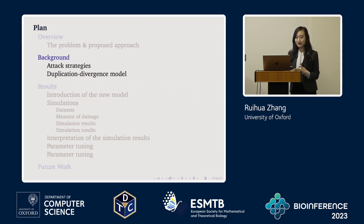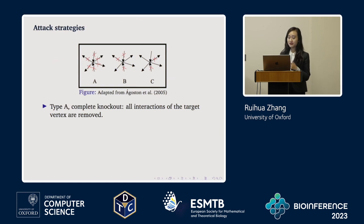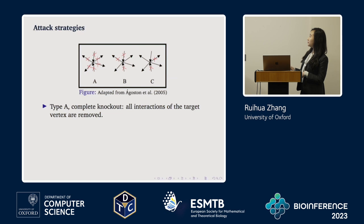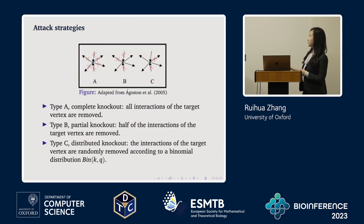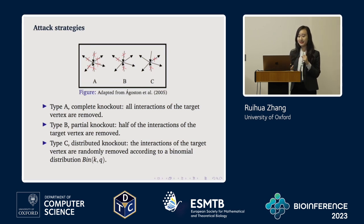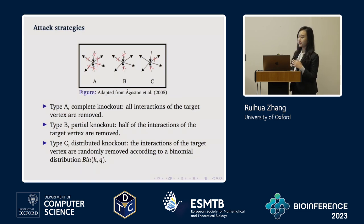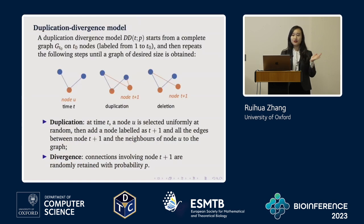The mathematical tools used to model this problem involve three different types of attack. The first is complete knockout, where all edges connected to a randomly selected vertex are removed. The second is partial knockout, where half of the edges connected to the target vertex are randomly removed. The third is distributed knockout, where edges connected to the target vertex are selected according to a binomial distribution with parameters K or Q.